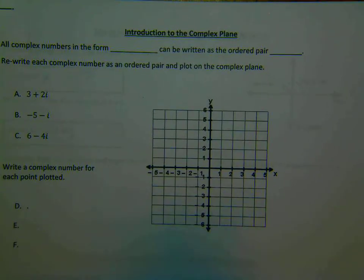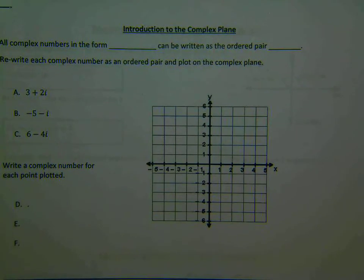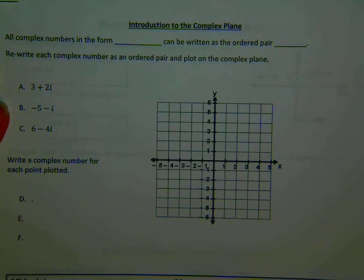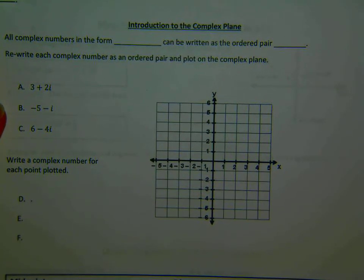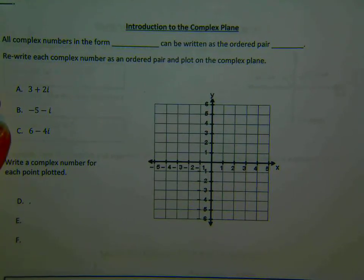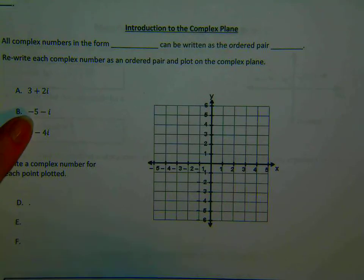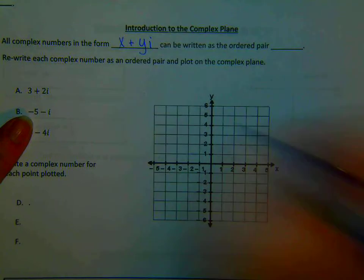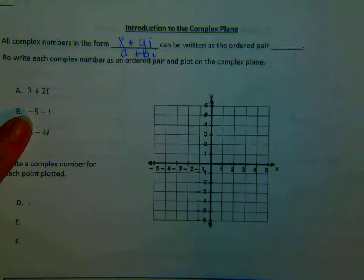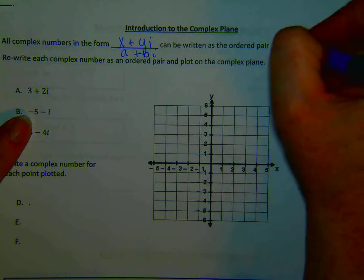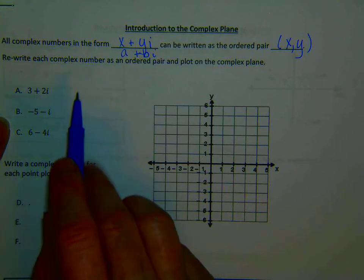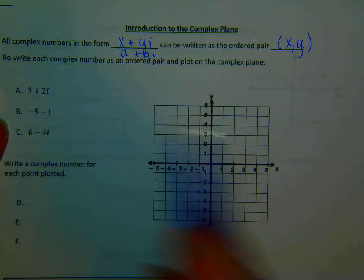Now we're going to talk about the complex plane - new topic. All complex numbers are in the form x plus yi, or sometimes written as a plus bi. We've talked about this before, earlier this year and last year in Algebra 2. They can be written as an ordered pair (x, y).